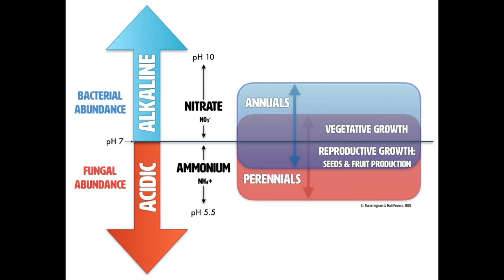If we look at this chart, we notice that bacterial-abundant, alkaline conditions favor nitrate, and below that fungal-abundant, acidic conditions favor ammonium. Annuals prefer dominant nitrate with a little bit of ammonium, and perennials prefer dominant ammonium with a little bit of nitrate.